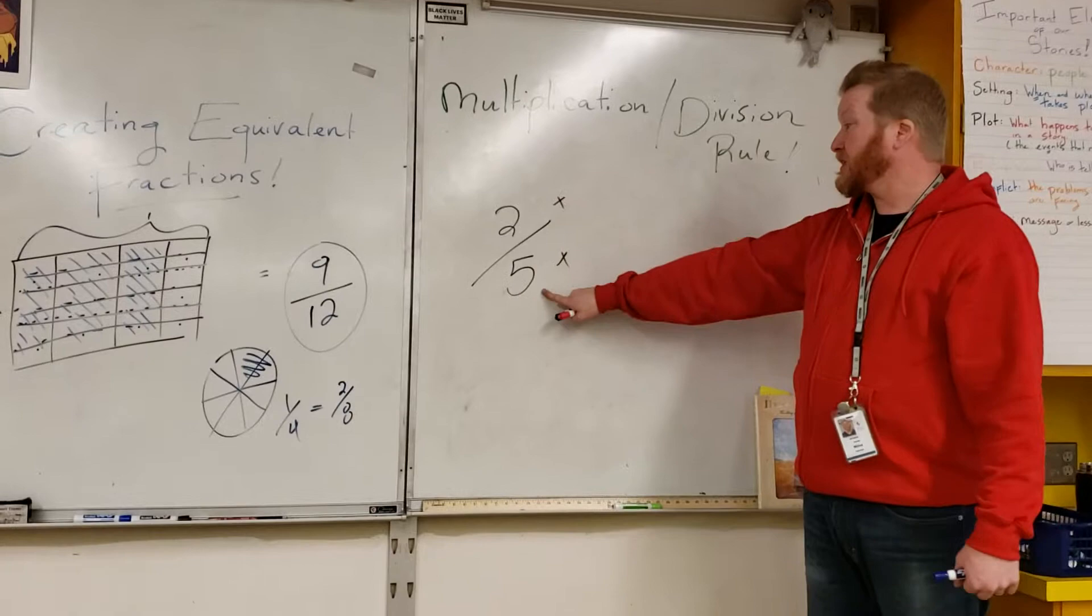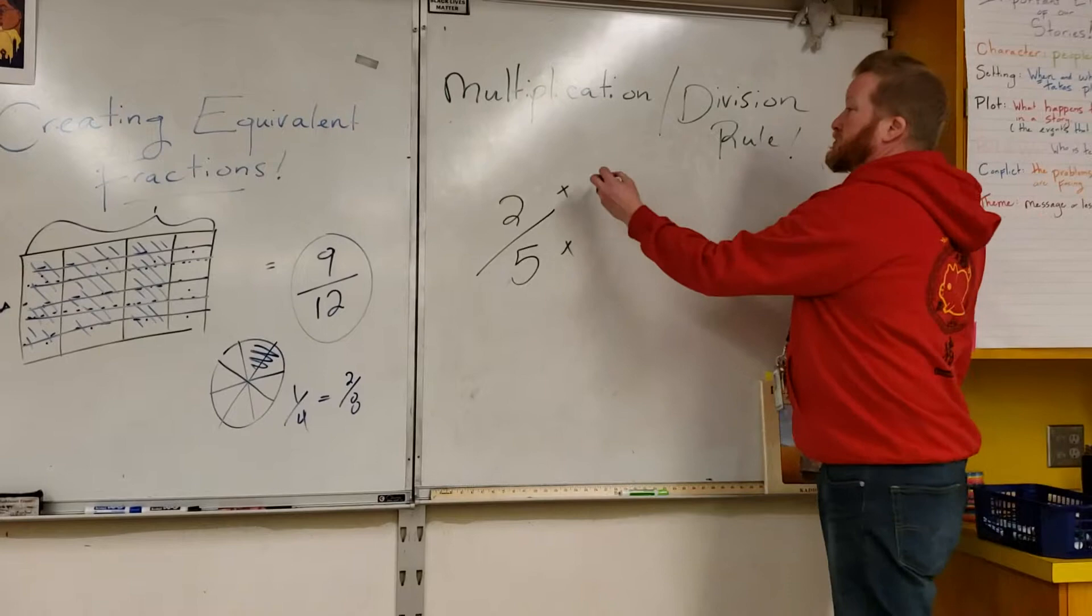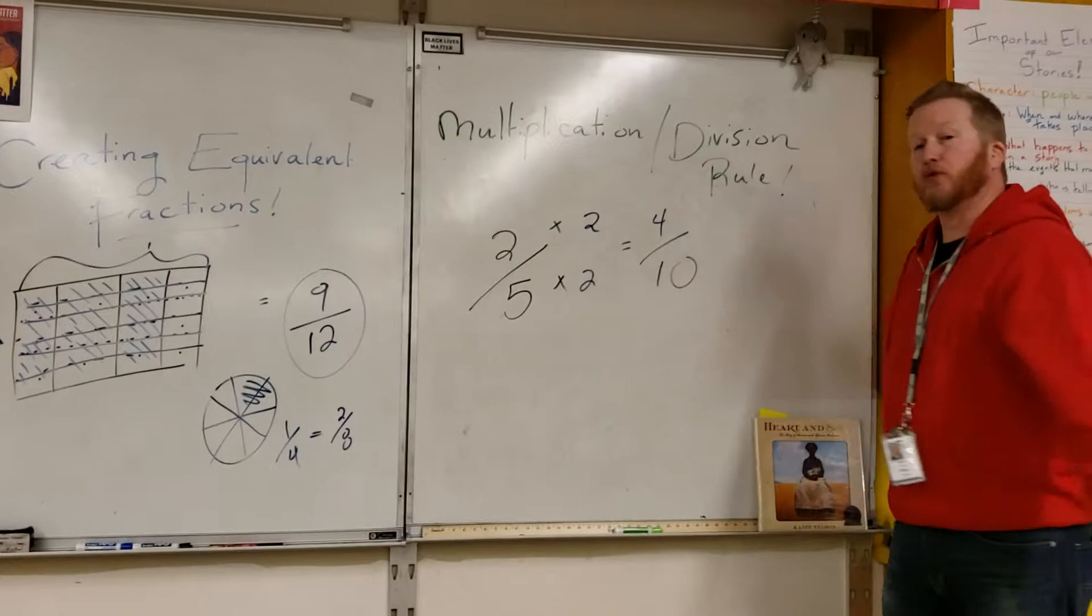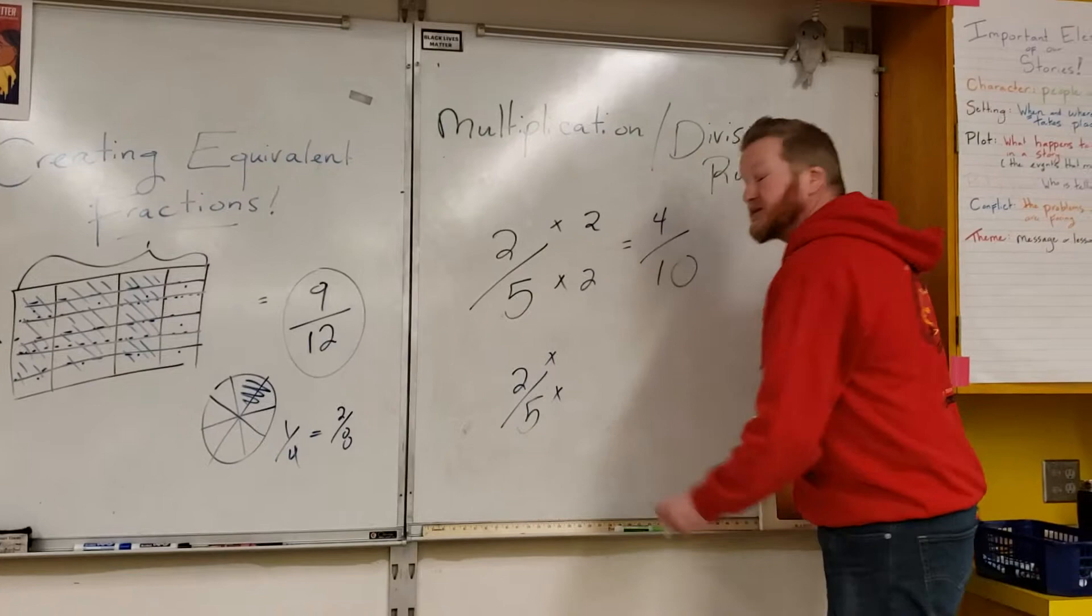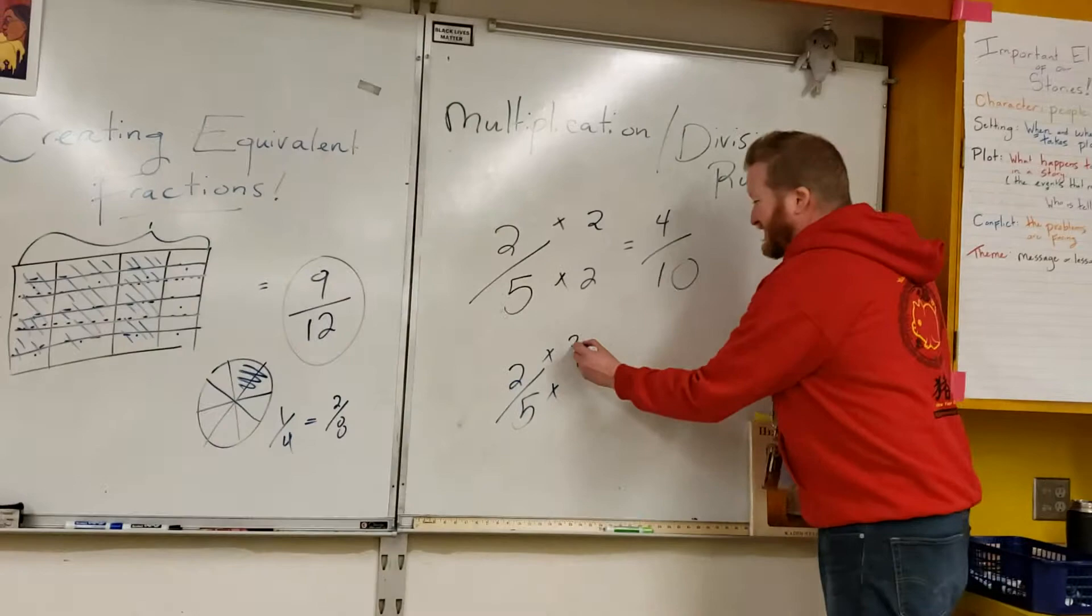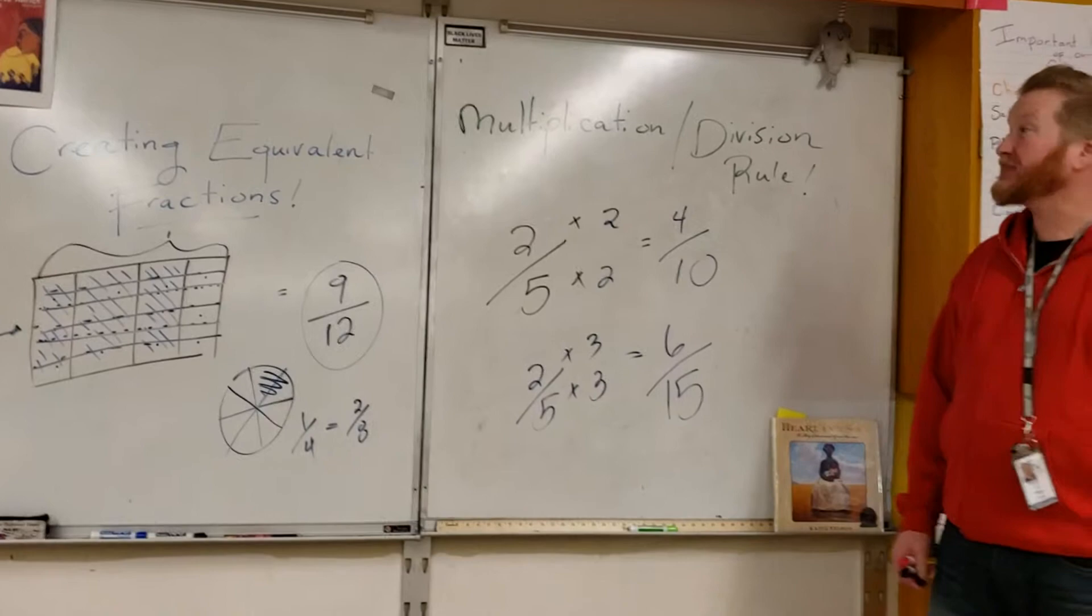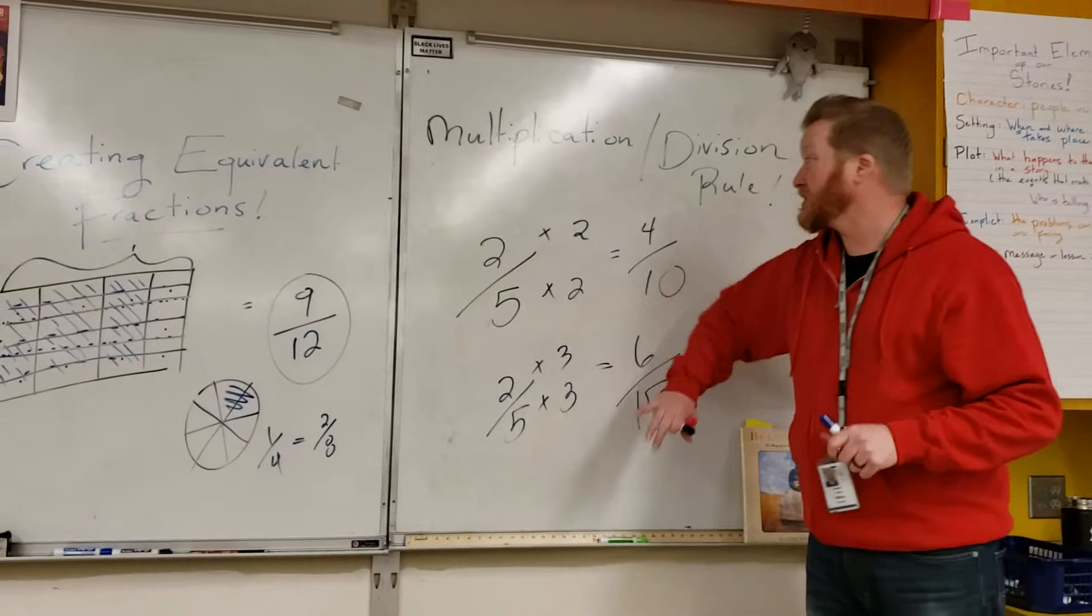As long as I multiply both the numerator and the denominator by the same number, I will end up with an equivalent fraction. Quincy is 100% correct. If I multiply both of these by two, I end up with four-tenths. Lillian, tell me your favorite number. Three. Fantastic. We end up with six-fifteenths. That is definitely another way that students can find an equivalent fraction from any other fraction.